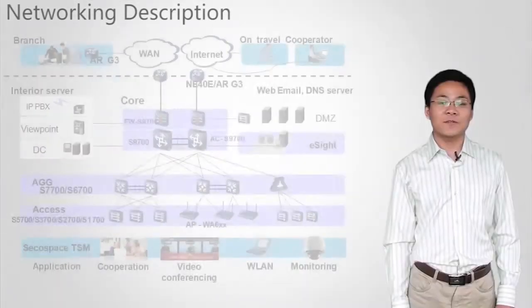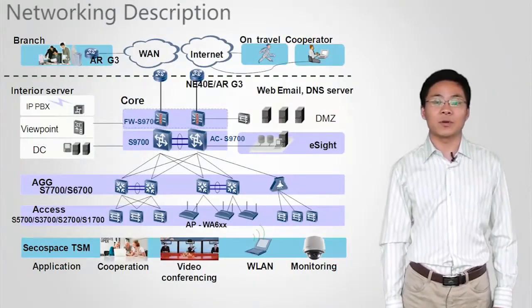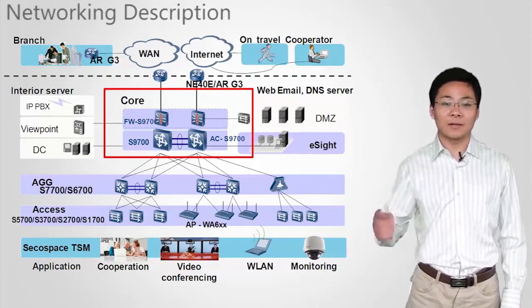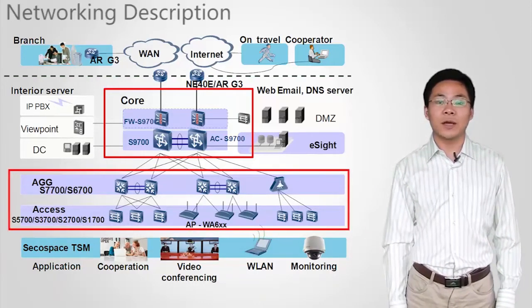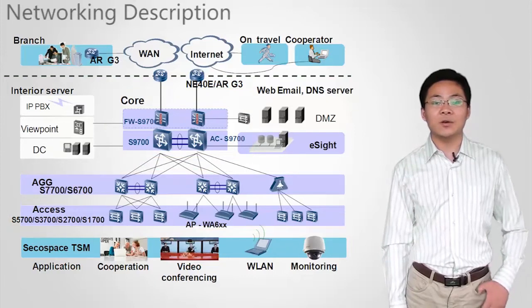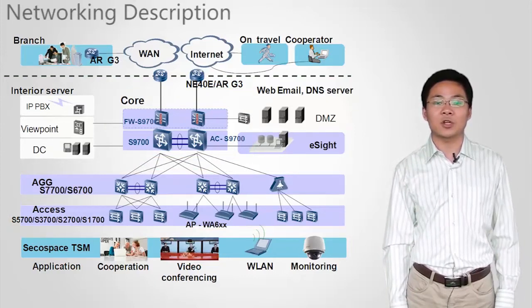S9700 switches are used on campus networks and in data centers. First, let's learn how S9700 switches are used on campus networks. This figure shows a typical campus network. S9700 switches are deployed at the core layer. S7700 and S3 series box switches are deployed at the aggregation layer and the access layer. S9700 switches are equipped with powerful functions.